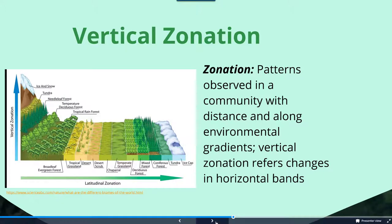There's another pattern that occurs, something we refer to as zonation. This is essentially where patterns are observed in a community with distance and along environmental gradients. In particular, we have vertical zonation, which can refer to changes in horizontal bands attributable to changes in altitude, as well as latitudinal zonation that can occur.